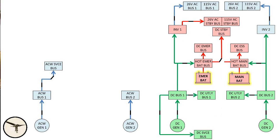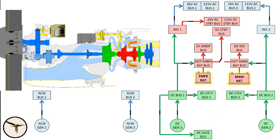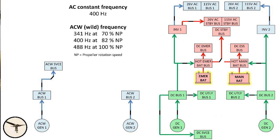It is called AC wild because the frequency is variable. The reason is that the AC wild generators are attached to the propeller gearbox. While the AC constant frequency system operates at 400 hertz, the AC wild frequency system operates from 341 to 488 hertz, depending on the propeller rotation speed, called NP. The voltage is 115 or 200.